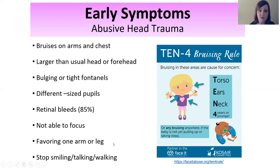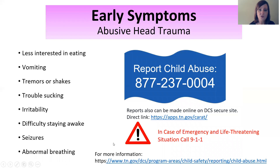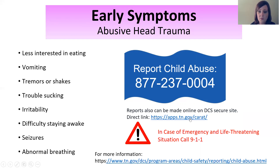Look for stopping smiling, talking, or walking. Early symptoms of abusive head trauma can also include changes in interest in eating, vomiting, trouble sucking, irritability, seizures, and a change in breathing — perhaps the child has had an injury to their ribs causing pain when they breathe. If you suspect child abuse, you can report it. There is a toll-free number provided by DCS, as well as a secure website where you can make a report. If there is an emergency situation, call 911 immediately. There is also a website through DCS for more information.